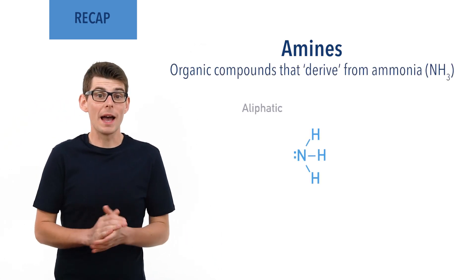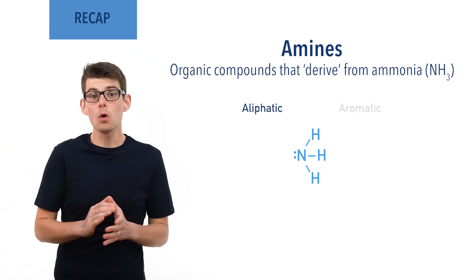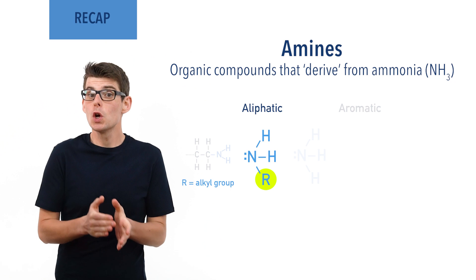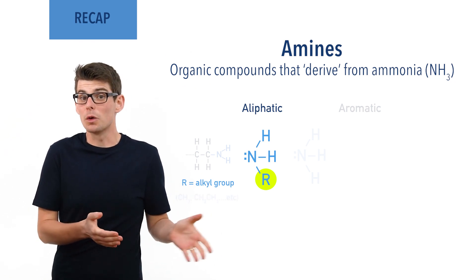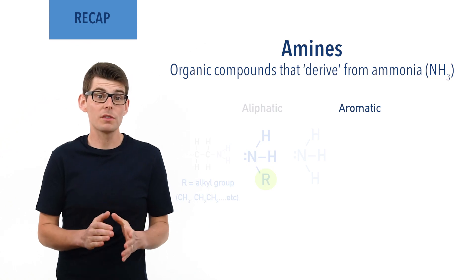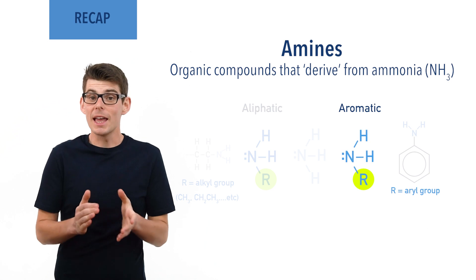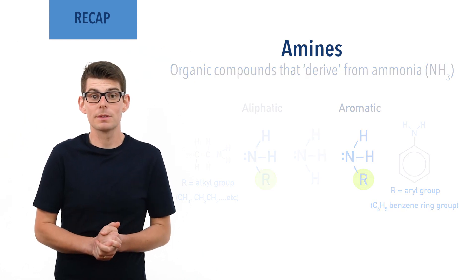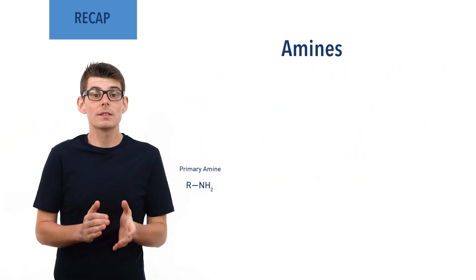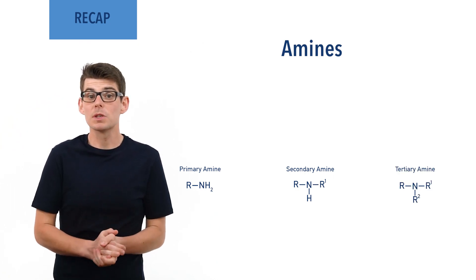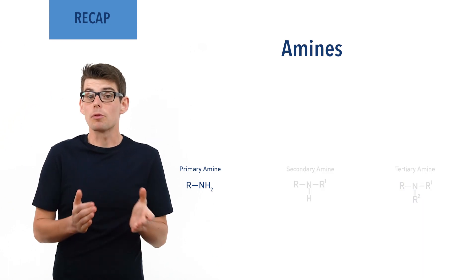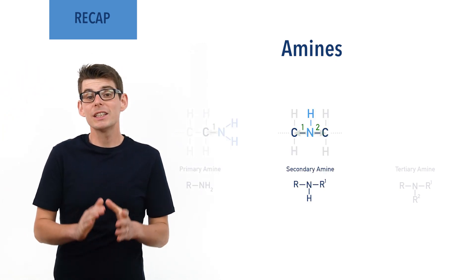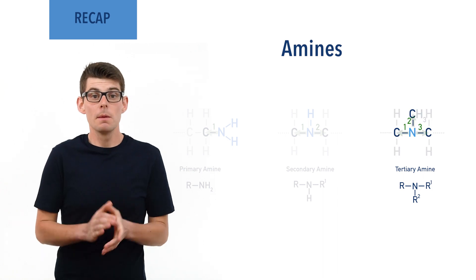Amines can be aliphatic or aromatic. In aliphatic amines, one or more of the hydrogen atoms in ammonia has been replaced with an alkyl group. An aryl group is an aromatic ring such as phenyl — effectively a benzene ring group that is bonded to something else. Amines can be primary, secondary, or tertiary, depending on the number of carbon groups bonded to the nitrogen. Primary amines have one carbon group bonded to the nitrogen, secondary amines have two, and tertiary amines have three.